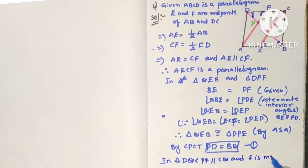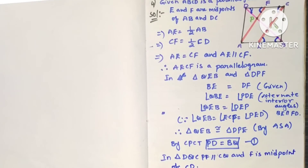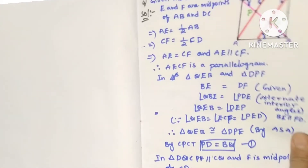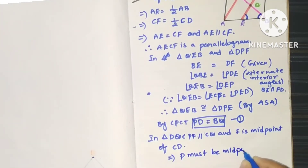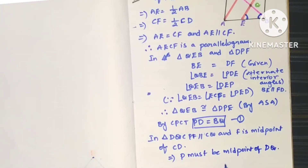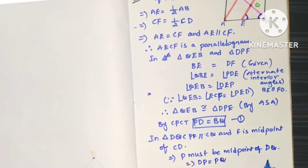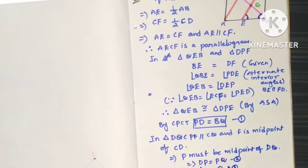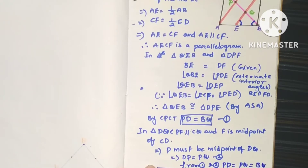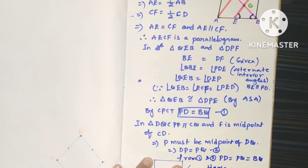Now, since PF is parallel to CQ and F is the midpoint of CD, by the converse of the midpoint theorem, P must be the midpoint of DQ. That implies DP equals PQ. From the congruent triangles we also get BQ equals PQ. So from both results, DP equals PQ equals BQ — hence proved that AF and CE trisect diagonal BD.